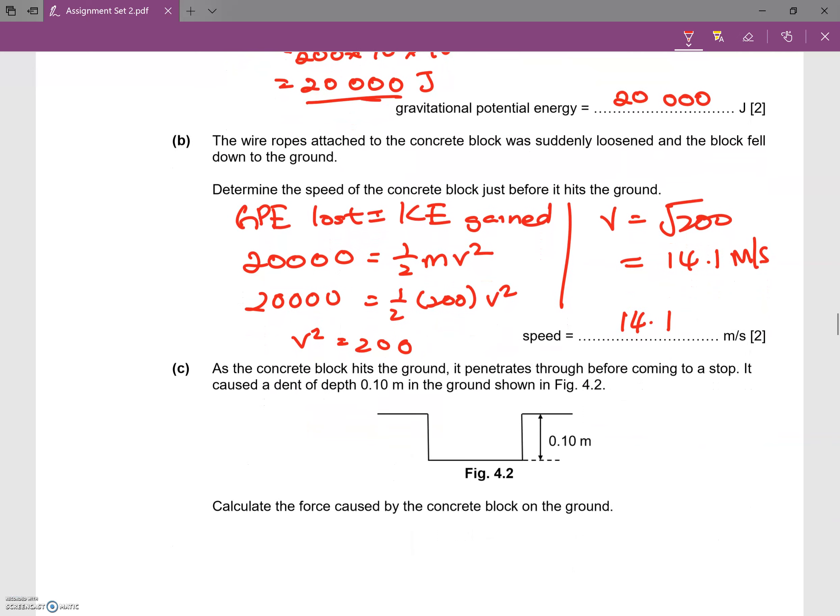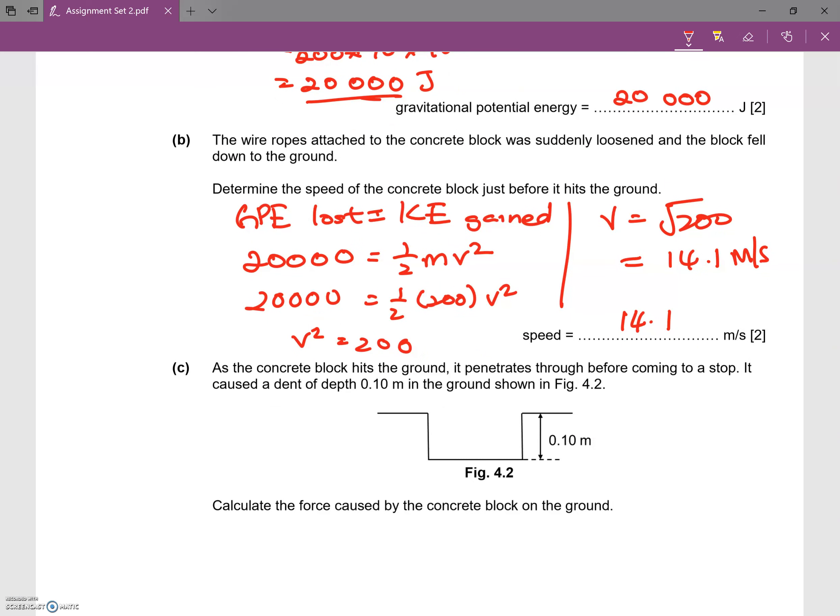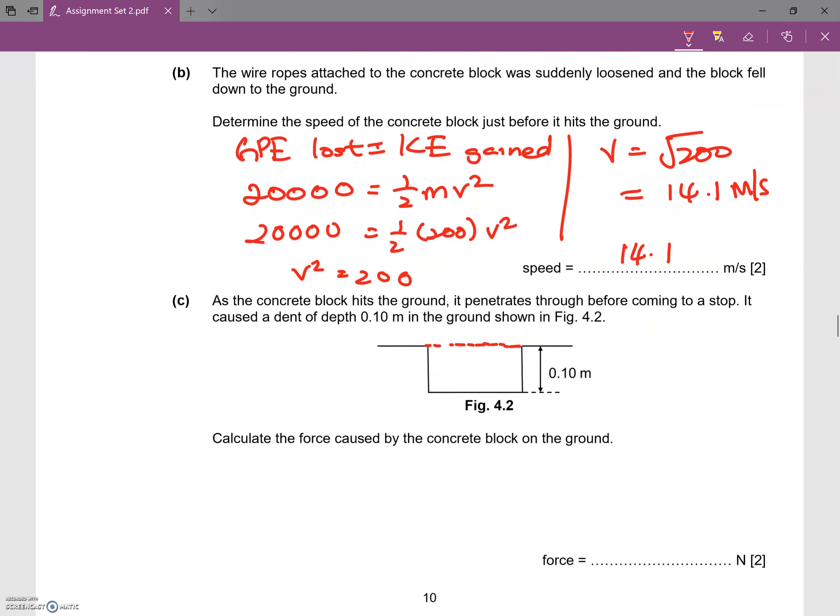Now in part C, as the concrete block hits the ground it penetrates through before coming to a stop. It causes a dent of 0.10 meters in the ground as shown. So this is the ground. Initially it was at this level, but because it has damaged the ground, the ground has sunk in by 0.10 meters. Calculate the force caused by the concrete block on the ground.